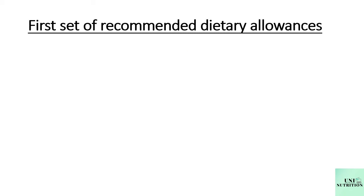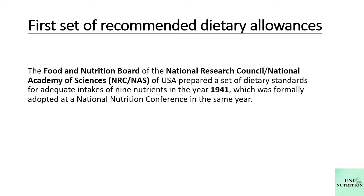The first set of recommended dietary allowances were given by the Food and Nutrition Board of the National Research Council — also known as the National Academy of Science (NRC or NAS) — an organization of the USA. They prepared the first set of dietary standards for adequate intake of nine nutrients in 1941. This was adopted by the National Nutrition Conference in the same year.